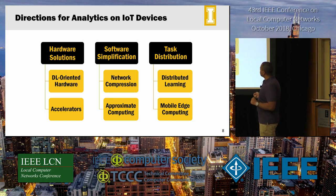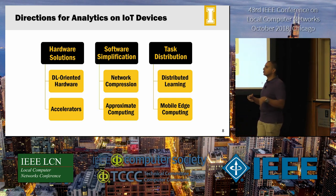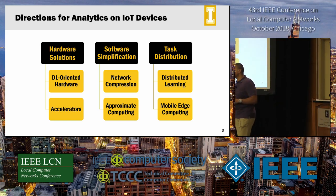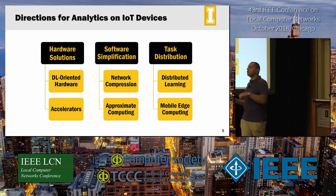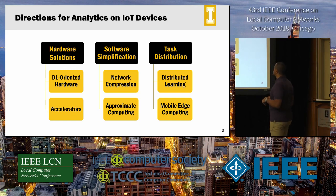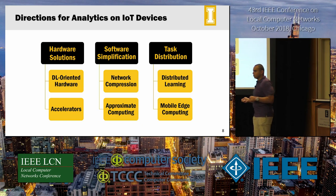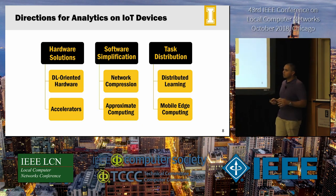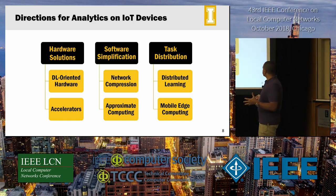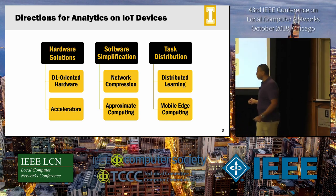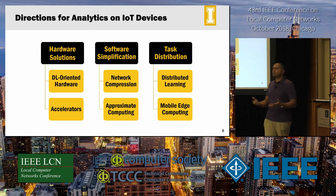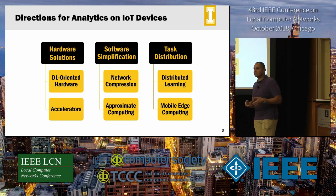The way to implement these analytics lies on three pillars. Based on surveying solutions from researchers and industries over the past year or two, we found they can be classified under three pillars: hardware solutions — making hardware more efficient and capable of deep learning on the chip itself; software simplification — involving network compression and approximate computing; and task distribution — the combination of distributed learning over multiple devices with mobile edge computing, which is another direction we're hoping will achieve the level of cognition and fast analytics over IoT devices.